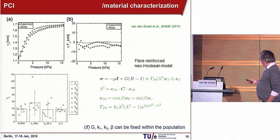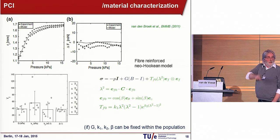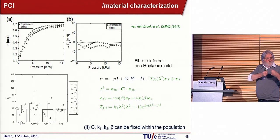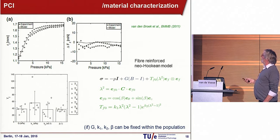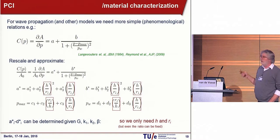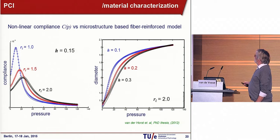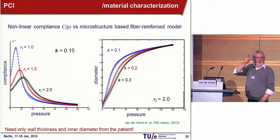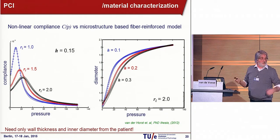We measure in coronary arteries of humans and pigs the radius and flow, and we find this relation. We take care that we stretch the artery in a proper way, because an artery is pre-stretched in the longitudinal direction. Then we try to find the parameters that describe the stiffness of the artery. Once this is done you can use this to come up with a simple relation of the compliance — the cross-sectional area divided by the pressure. We can fit quite well how the behavior is. The conclusion of this work is that we need only the inner diameter and the wall thickness to know how this artery will dilate due to a pressure change, and we can put that into the model.